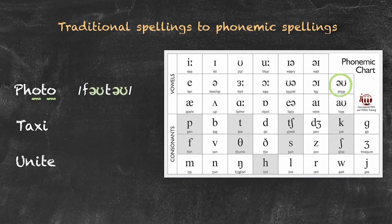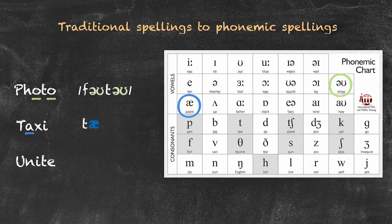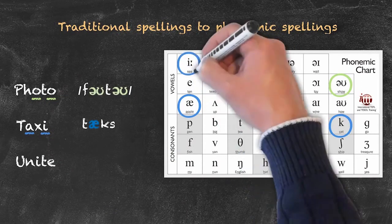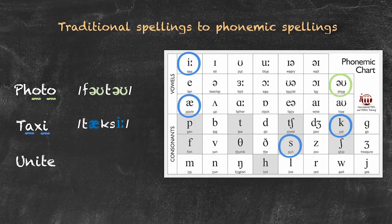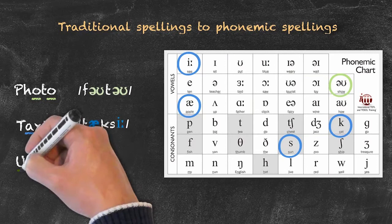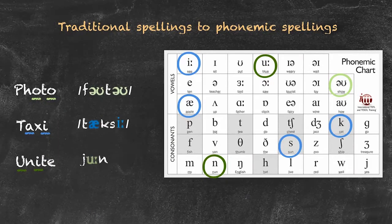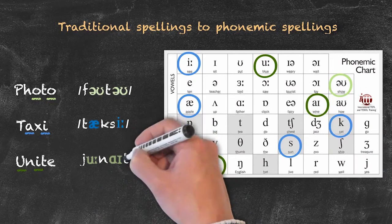Now we have 'taxi.' We have T as the first sound, then A — we locate the vowel symbol. The X here actually has two phonemes — the K and S — so we look at the K and S phonemes, and the last phoneme is E as in the long I sound — giving us 'taxi.' Now we have 'unite.' As mentioned previously, there's a slight Y sound at the beginning, so we begin with our Y phoneme, then U, then N, then I as in 'by,' and our final T sound — giving us 'unite.'